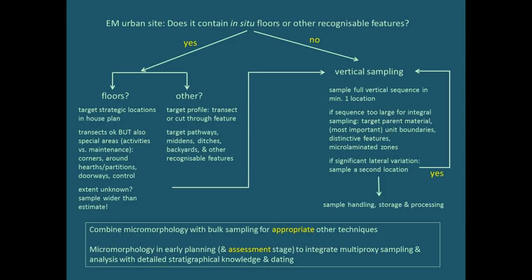To address how we can better find these difficult early medieval phases, I've made a simple flowchart targeting the right samples. Does your site contain in-situ floors or recognizable features? If yes, take transects but also target special areas illustrating activities rather than just maintenance — corners, around hearths, wall partitions, doorways. If you have other features, try to sample them in profile. If you have dark earths and no features, you need vertical sampling — ideally a full vertical sequence, or at minimum a control sample from the parent material plus samples from every boundary, or from micro-laminated zones. And ideally take samples from two or three locations to capture spatial differences.